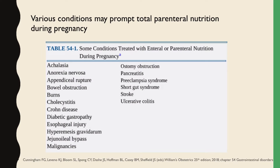Here are the various conditions which may prompt total parenteral nutrition during pregnancy: achalasia, anorexia nervosa, appendiceal rupture, bowel obstruction, burns, cholecystitis, Crohn's disease, diabetic gastropathy, esophageal injury, hyperemesis gravidarum, jejunal bypass, malignancies, ostomy obstruction, pancreatitis, pre-eclampsia syndrome, short gut syndrome, stroke, and ulcerative colitis. Some of these conditions we will discuss in the next slides.